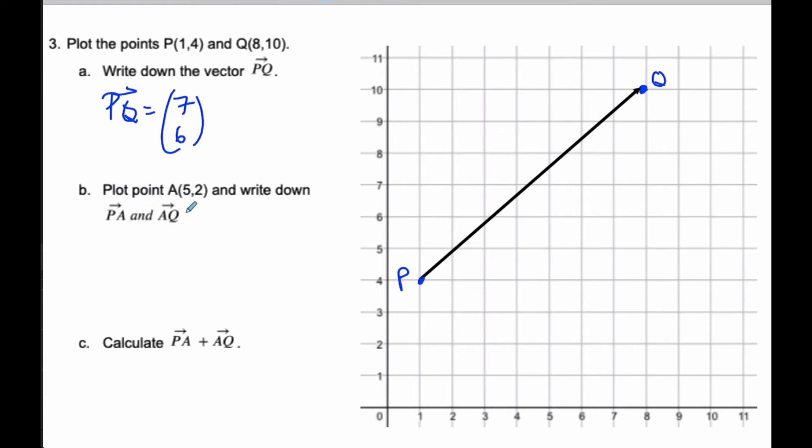Now it says to plot A, which is (5,2). I'm going to switch to purple. I'm going to go 5, 2 is A. And it says write down PA and AQ. Well, PA then is going to be A minus P, so it's 5 minus 1 is 4, and 2 minus 4 is negative 2. It's PA.